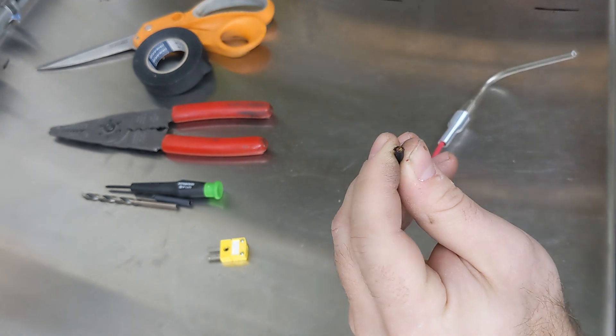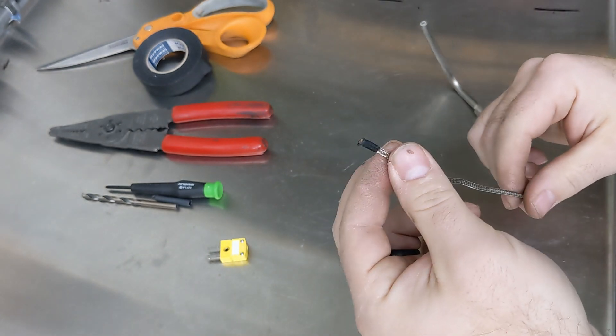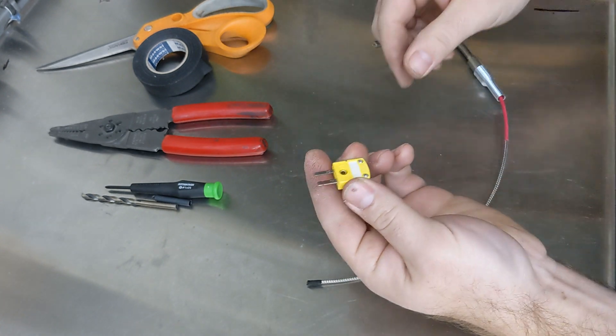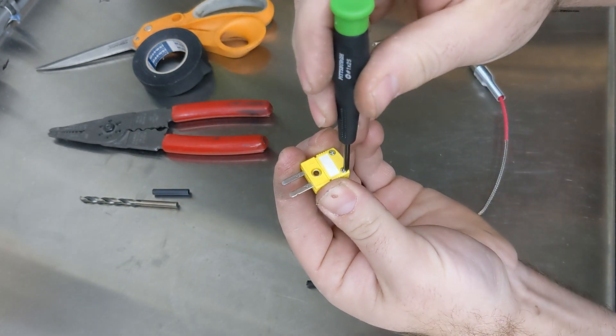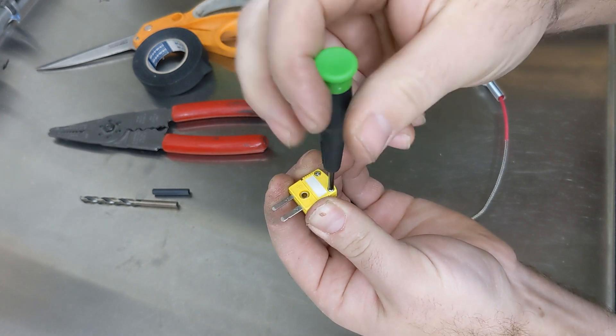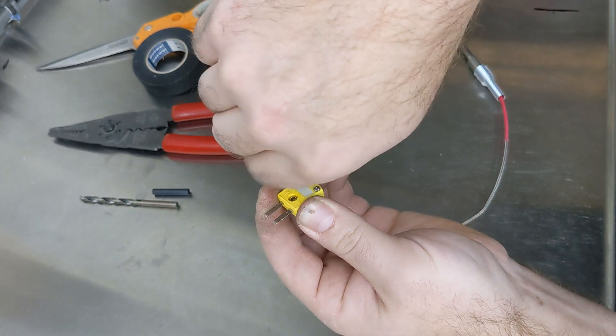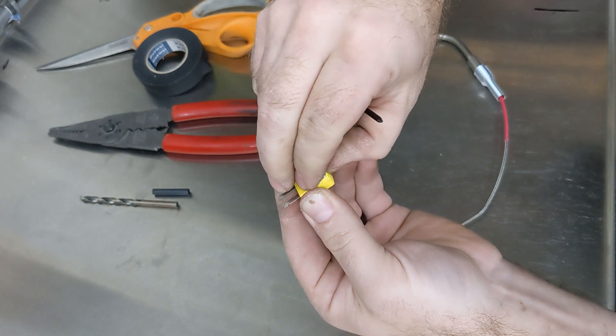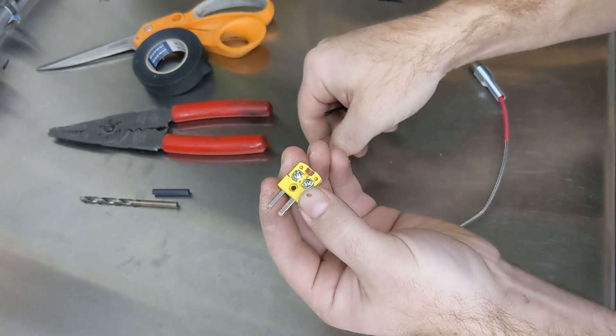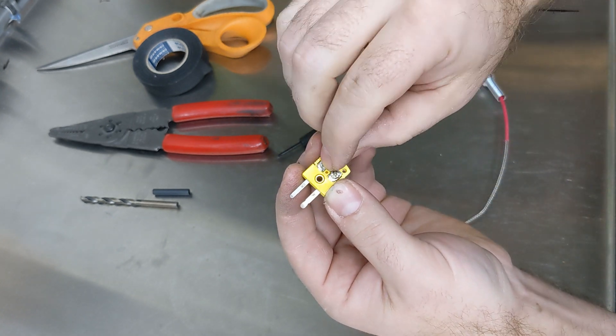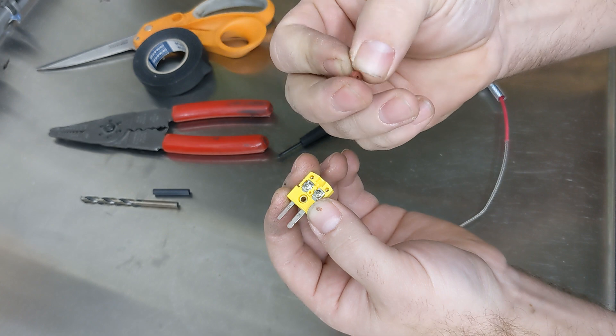The next step is to get this little plug onto the wire. I'm going to take this guy apart. It's just two little Phillips screws. Then this guy comes apart and exposes the two Phillips that the wires go to. But I need to take this little gasket grommet guy and I need to get him on this wire.